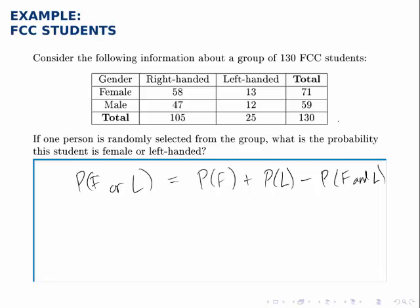We're randomly selecting from a group of 130 students, so that's the denominator on each of these pieces. The number of ways to select a female student is 71, because there are 58 right-handed female students and 13 left-handed female students, for a total of 71 female students.